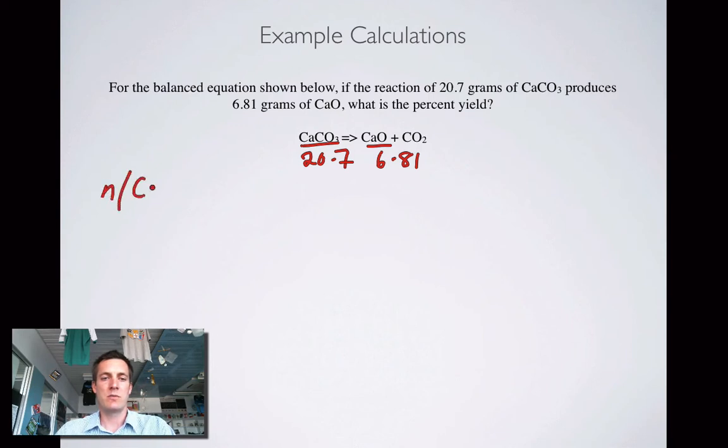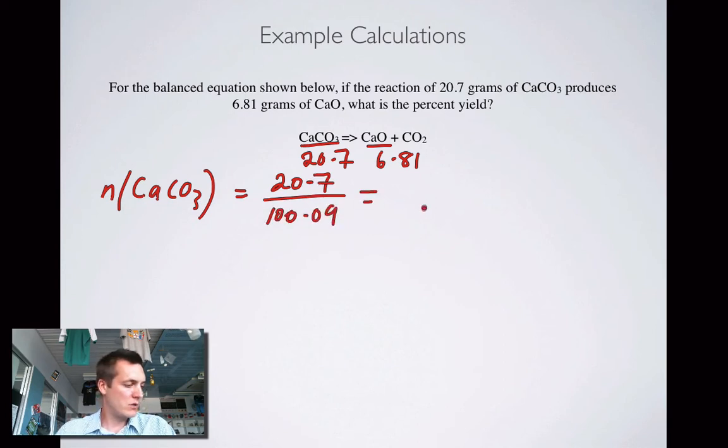So let's find the number of moles of calcium carbonate. That equals the mass over the molar mass, so 20.7 over 100.09, and what does that equal? That equals 0.207 moles.